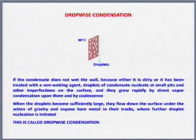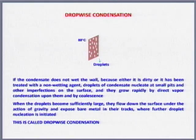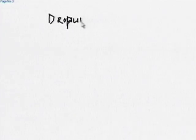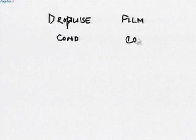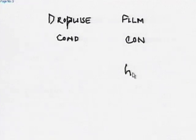In dropwise condensation there are small drops all over the place; the rest of the places where film is not there are filled with air. Resistances are less because the thermal conductivity of air is lower than that of water. So dropwise condensation is more effective than film condensation. That means the heat transfer coefficient H for film condensation should be lower than for dropwise condensation — film wise is lower, dropwise is higher.